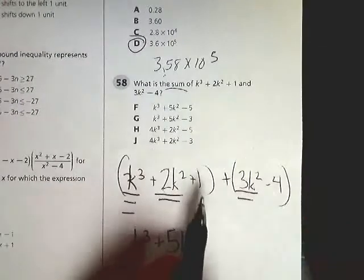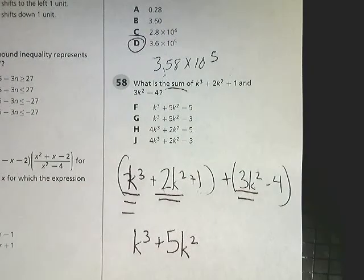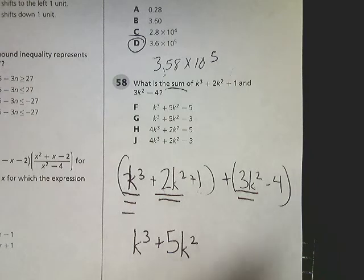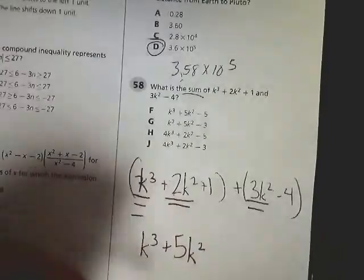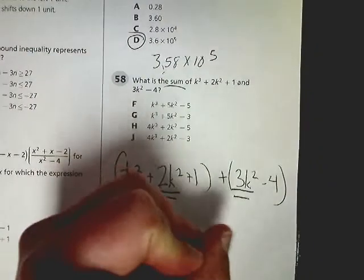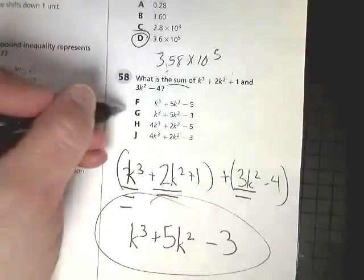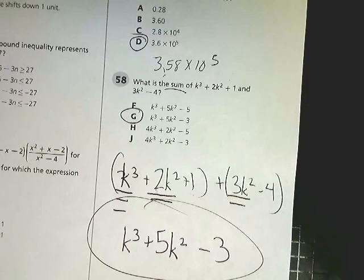And then these two numbers, it's kind of like the shirts and skins team. They're like terms because they don't have variables with them. In the skins scenario, they are a team because they don't have shirts on. Well, in this case, they don't have variables. 1 minus 4 is negative 3. So my final answer is g for number 58.